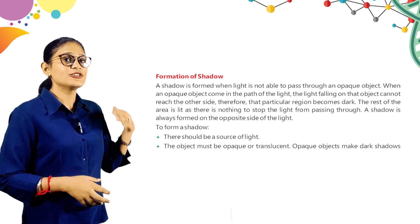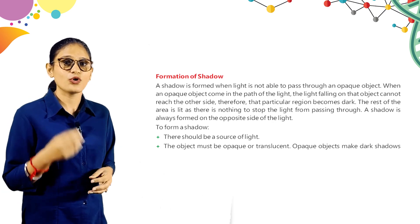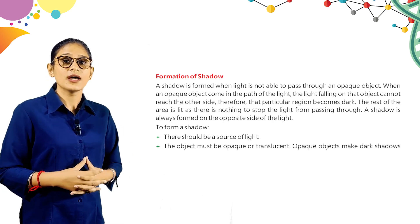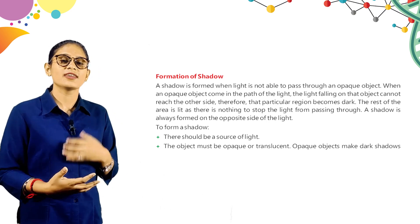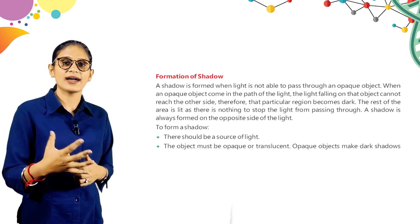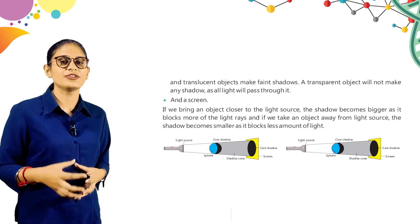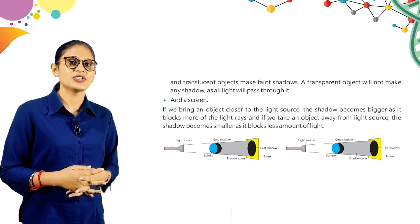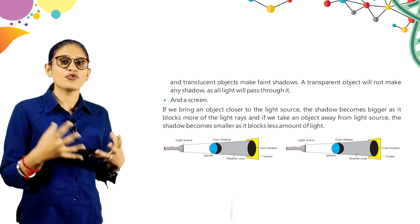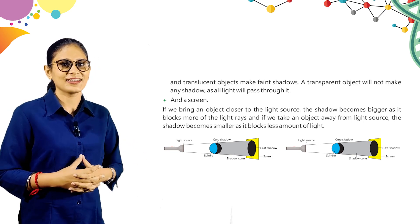To form a shadow, there should be a source of light, and the object must be opaque or translucent. Opaque objects make dark shadows, while translucent objects make faint shadows. A transparent object will not make any shadow as light will pass through it completely.